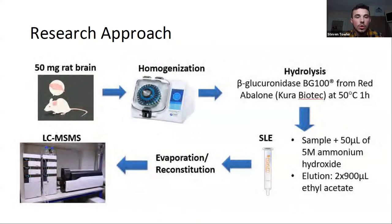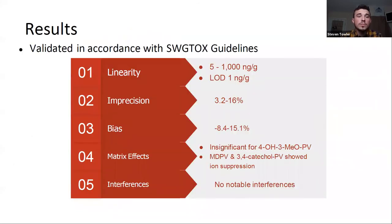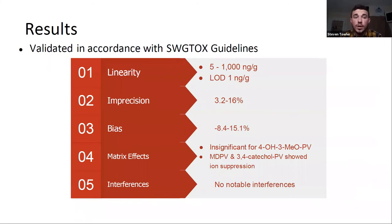This analysis allows us to quantify our compounds of interest by each compound's individual properties, yielding results with high specificity. Our method was subjected to a rigorous validation process corresponding with the guidelines put forth by the Scientific Working Group for Forensic Toxicology, or SWIG-TOX, which are universal standard practices for ensuring that a detection method is accurate and practical. Our method complied with the guidelines displaying a linearity of 5 to 1000 nanograms per gram, low imprecision and bias, slight ion suppression for two of the analytes, and limited interferences overall.